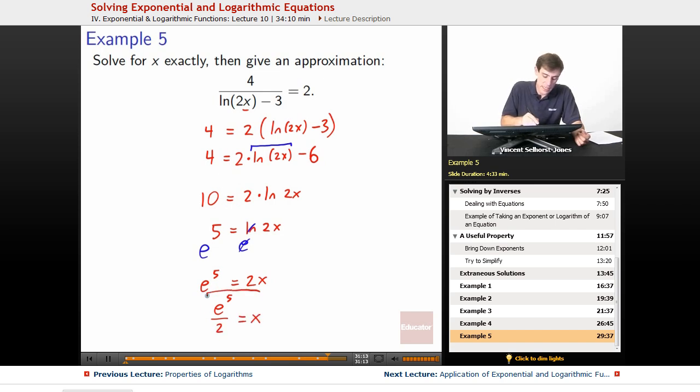And we've got e to the 5th equals 2x. So we've got that e to the 5th over 2 equals x. That's our exact answer, right? E to the 5th over 2. Now, e is this complicated, irrational number. We can't turn it into exactly a decimal number, but sometimes we want to have a decimal approximation because that makes it easier for us to work with things. So e to the 5th over 2 is the exact answer. That's what it is precisely. But if we want an approximate answer,